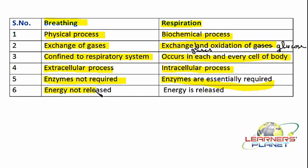During breathing, energy is not released; rather, energy is utilized for the contraction of rib muscles and diaphragm muscles to enable the breathing mechanism. In respiration, 38 ATP molecules are generated, which is only possible when energy is released. Glucose is oxidized to carbon dioxide and water — this is a catabolic reaction, and whenever a molecule is broken down to simpler form, energy is released. So in respiration, energy is released.